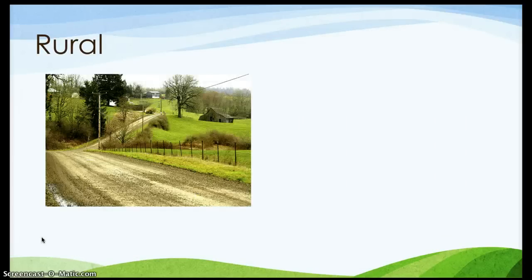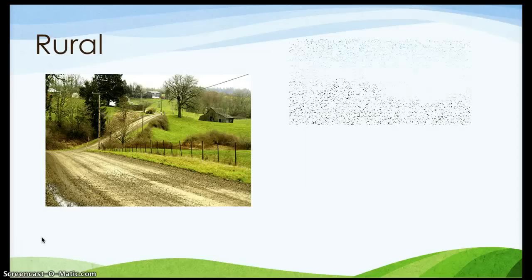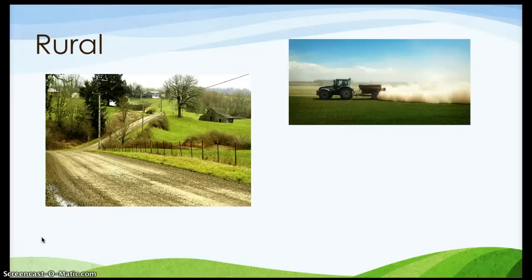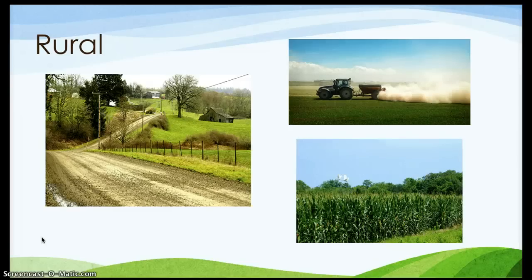Rural communities sometimes have dirt roads. The types of equipment that are used on their land might be things such as tractors and bulldozers. In rural communities, you might see crops growing.